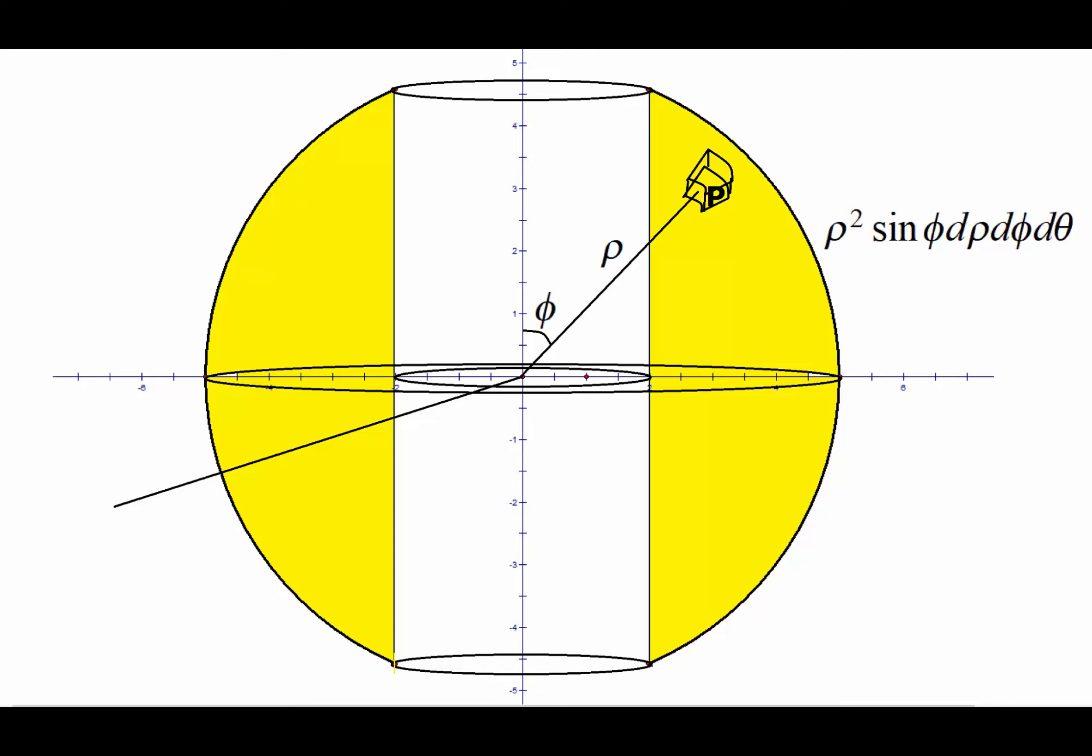If we set up the integral and would like to write the limits of rho, phi, and theta, what we shall have is: rho is going to vary from this length on the lower side to this length on the higher side. The upper limit is clear, that is going to be 5 from here to the boundary. For the lower limit, let's just take this triangle outside.